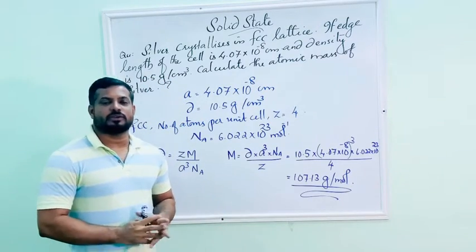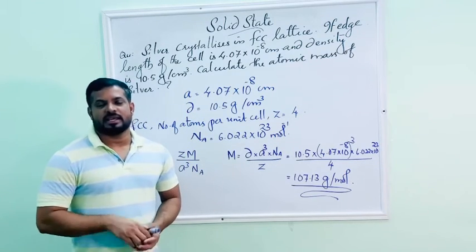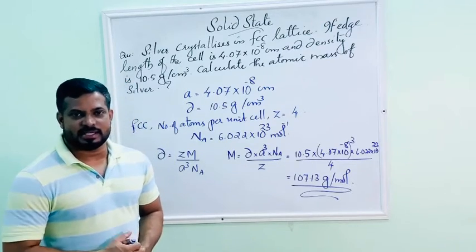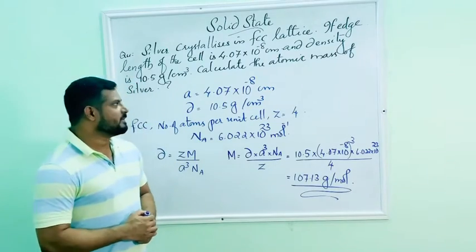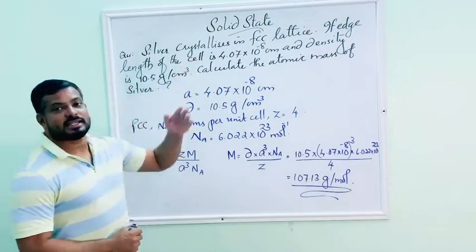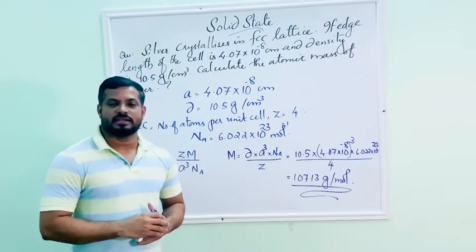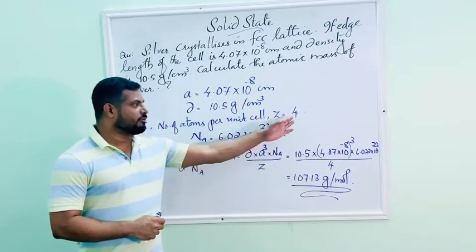First of all, you want to find out the given data and write it down. According to this question, silver crystallizes in FCC lattice, face centered cubic lattice. Number of atoms per unit cell equals 4.